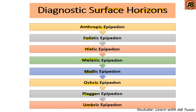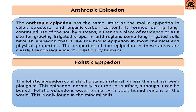The first one is the anthropic epipedon. The anthropic epipedon has the same limits as the mollic epipedon in color, structure, and organic carbon content. It formed during long-continued use of the soil by humans, either as a place of residence or as a site for growing irrigated crops. In arid regions, some long-irrigated soils have an epipedon that is like the mollic epipedon in most chemical and physical properties — the properties of the epipedon in these areas are clearly a consequence of irrigation by humans.